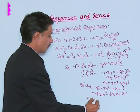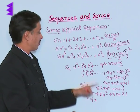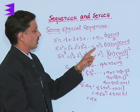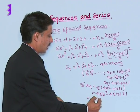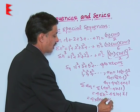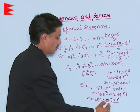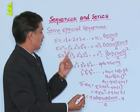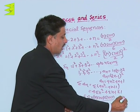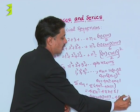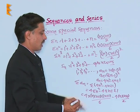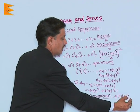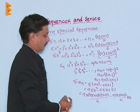This becomes 4 sigma n square, that means, 1 square, 2 square, 3 square. Here, this becomes n into n plus 1 into 2n plus 1 upon 6 minus 4 sigma n. Sigma n is n into n plus 1 upon 2. And then sigma 1, that is plus n.